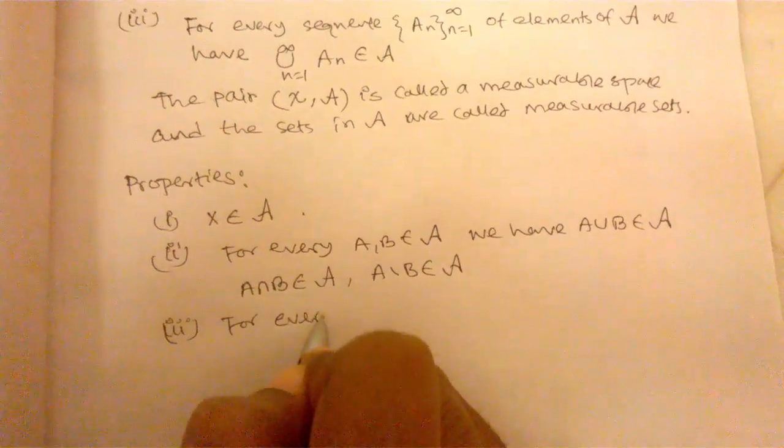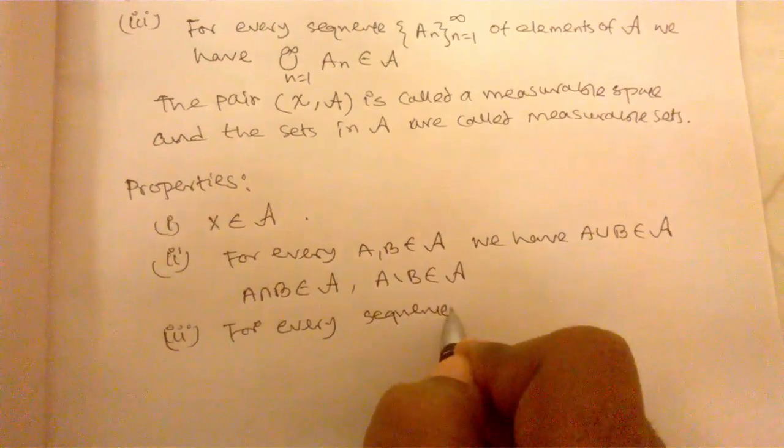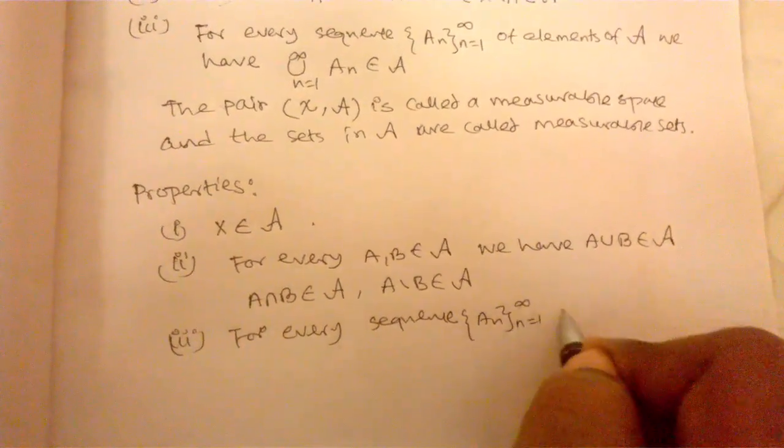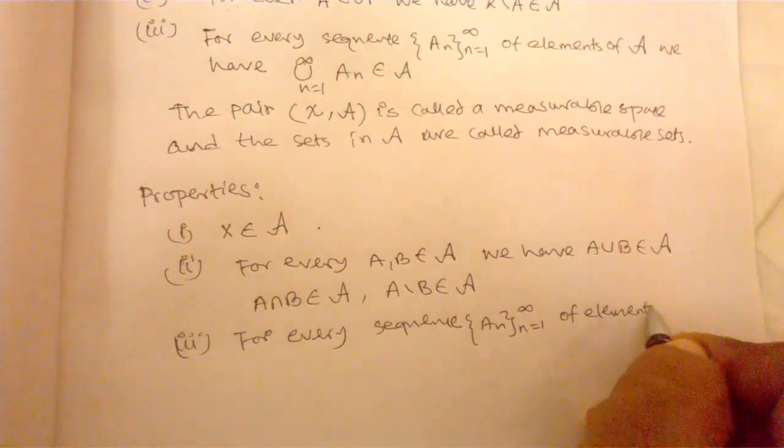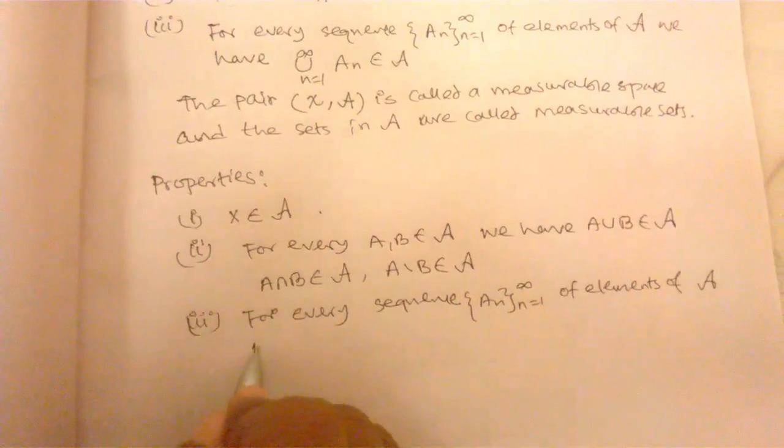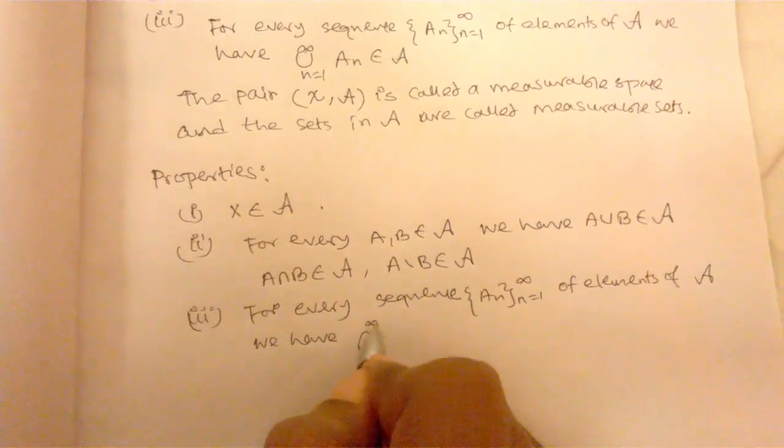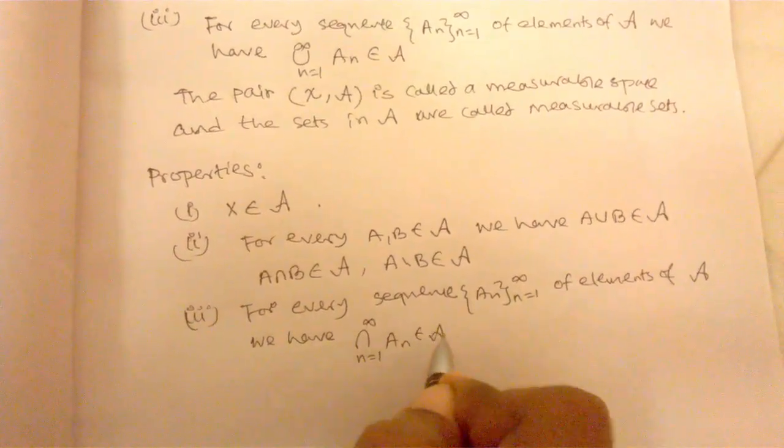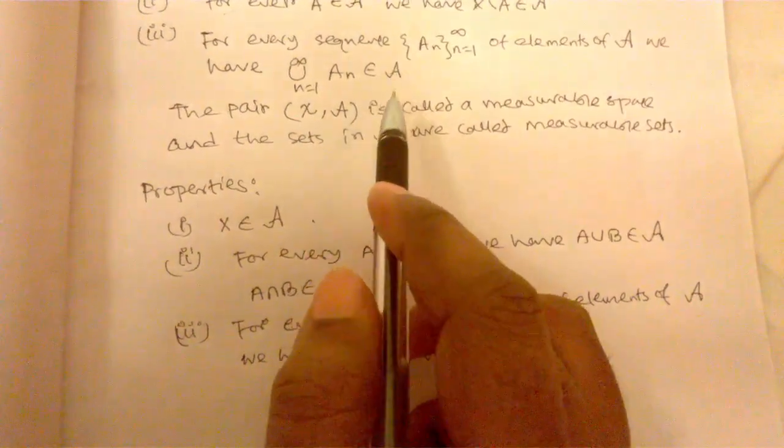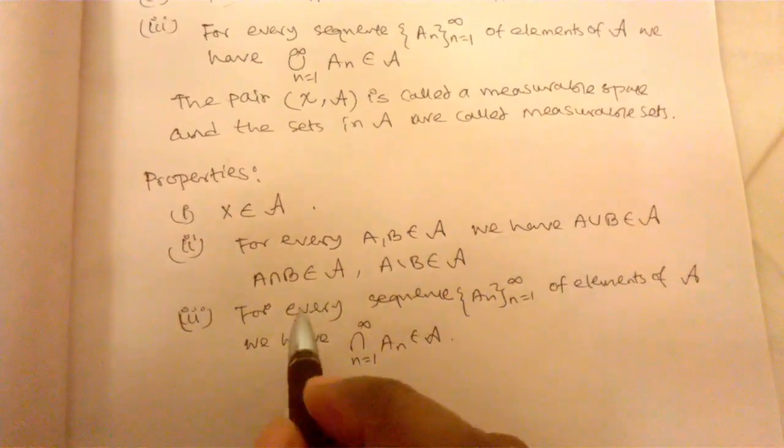Number 3, for every sequence A_n, n equals 1 to infinity of elements of A, we have intersection from n equals 1 to infinity of A_n belongs to A. Here we have just used the third property and just take its complement. And by the theorem of De Morgan's laws, then this property will be proved.